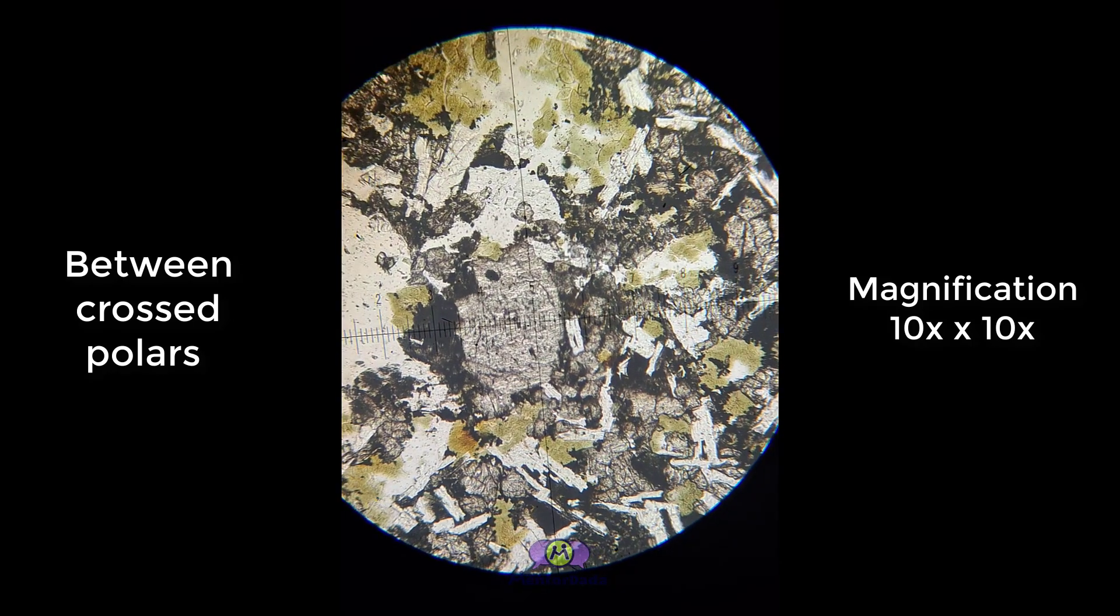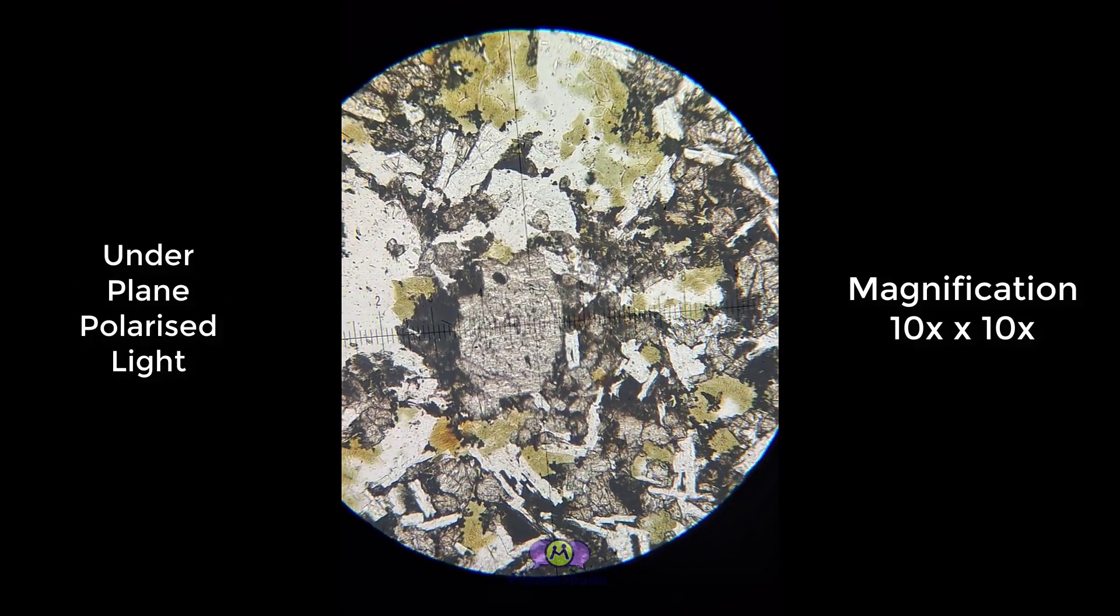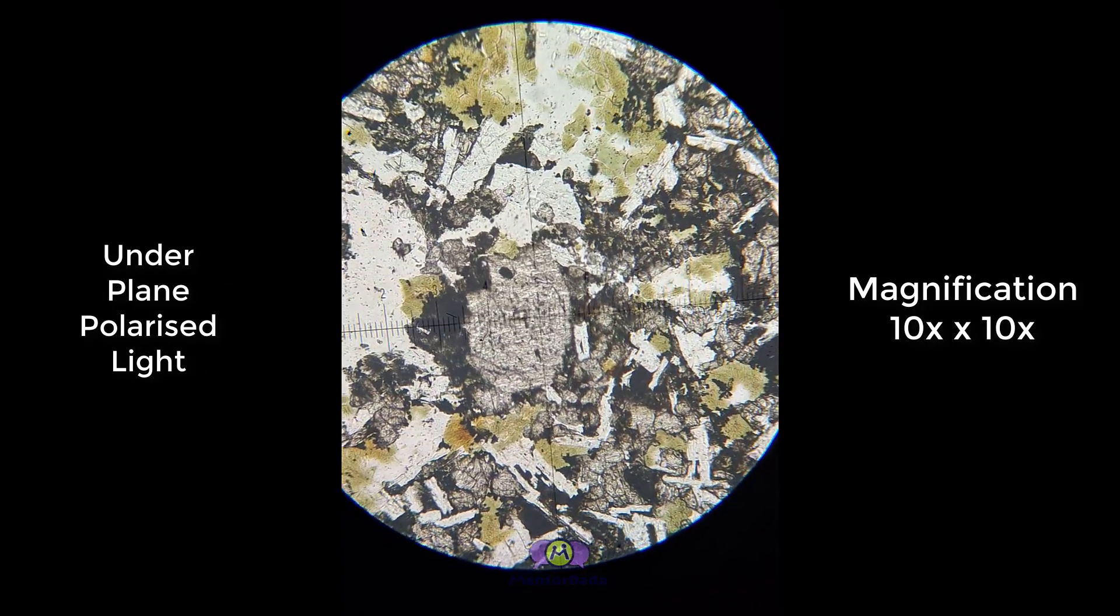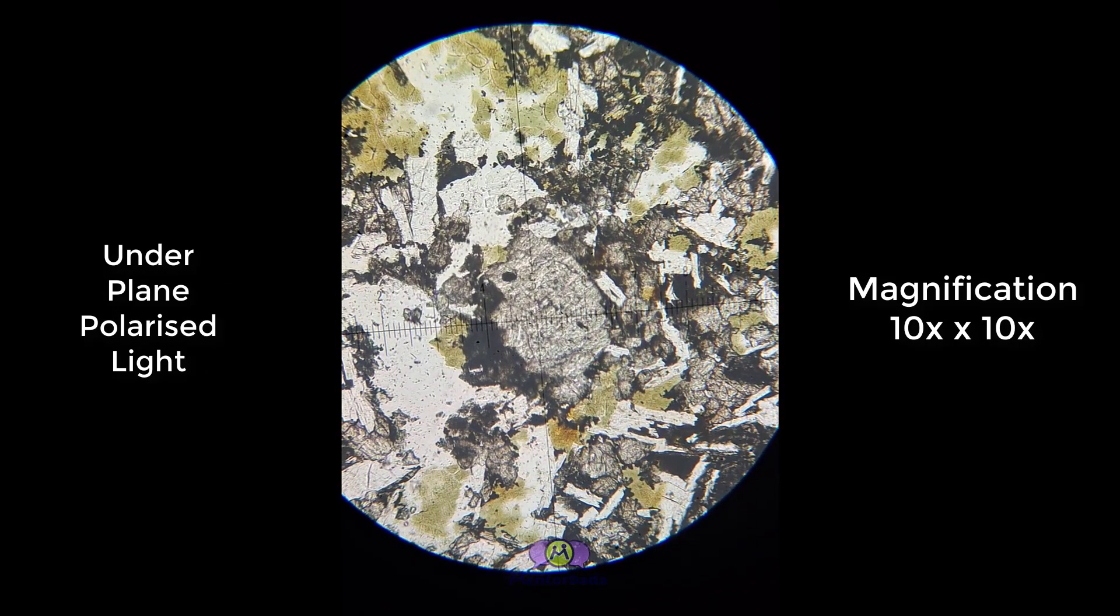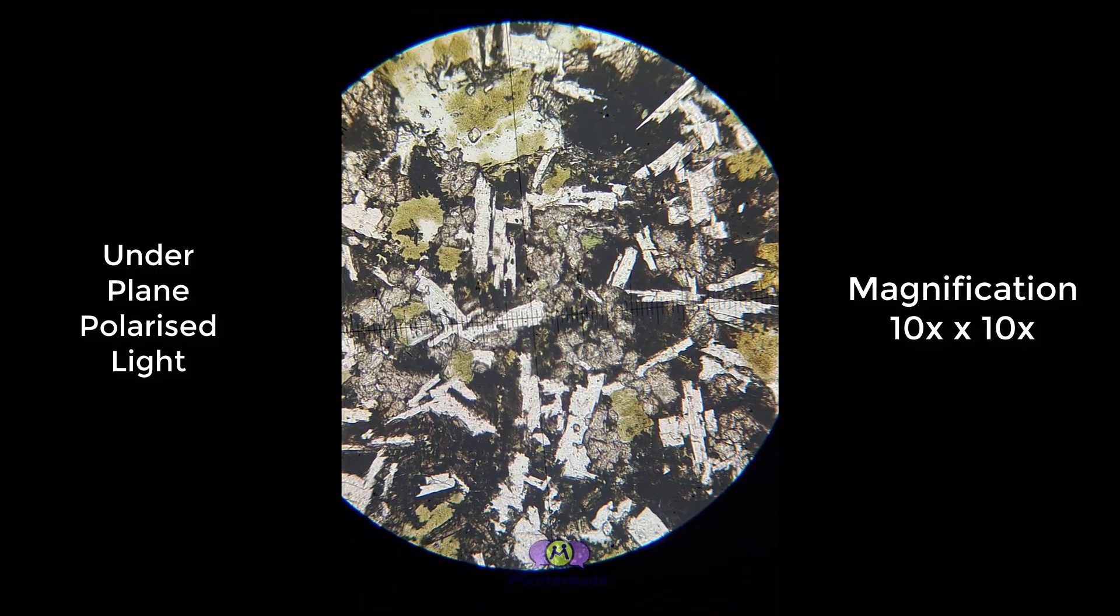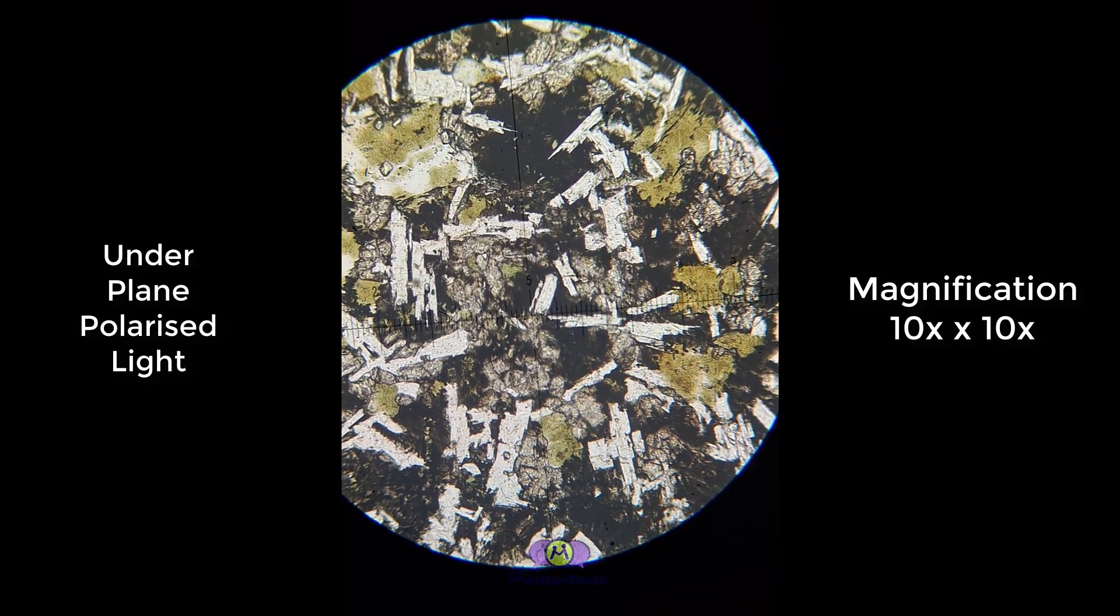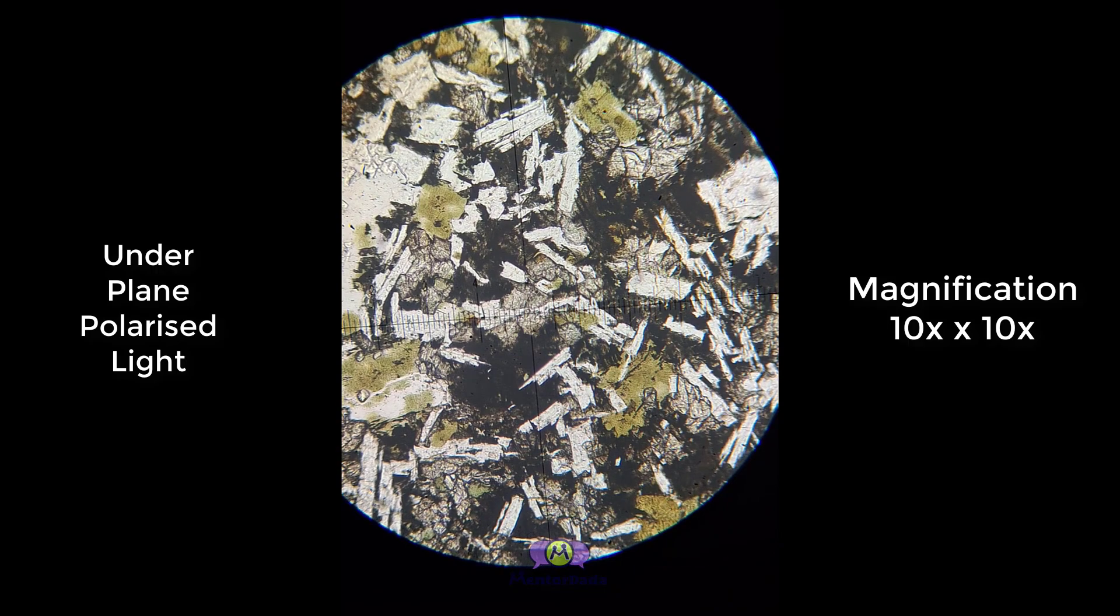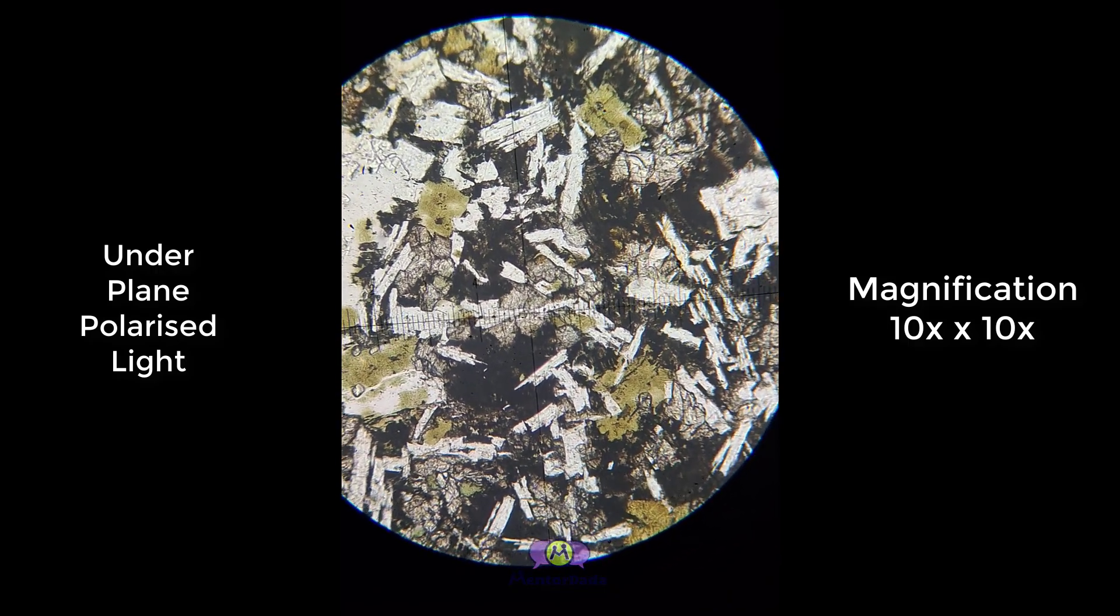If you look in plane polarized light, this mineral is showing high refractive index. These are all pyroxenes. A lot of pyroxenes are there, and the pyroxenes are colorless, relatively showing high refractive index.